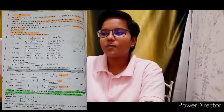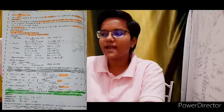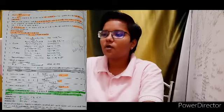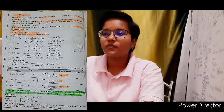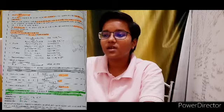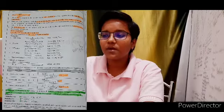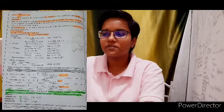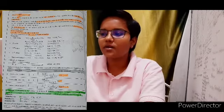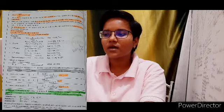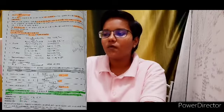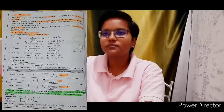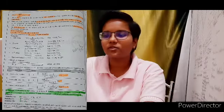The sum of powers of the concentration of reactants in the rate law expression is called the order of reaction. For rate = K[A]^x[B]^y, x + y gives the overall order. Order of a reaction can be 0, 1, 2, 3, or even a fraction.